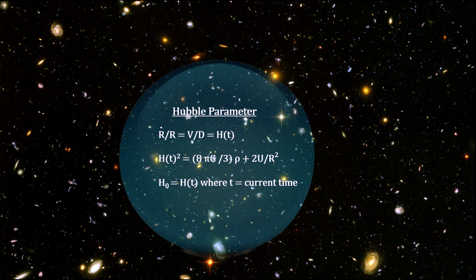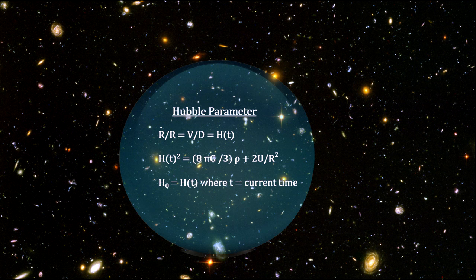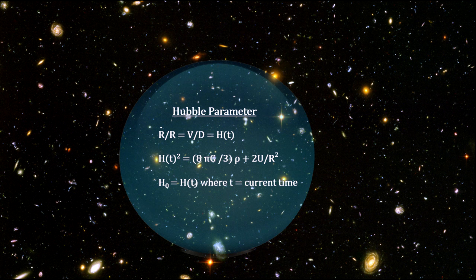This means that the Hubble constant is not really constant. We call it the Hubble parameter. The value we've been measuring is designated H0 and represents the value of the Hubble parameter at the current time.